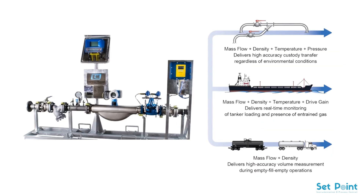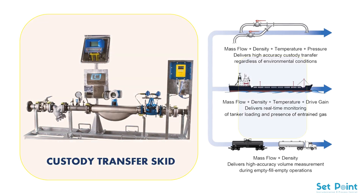Here we have an example of the custody transfer skids, which consists of a batch controller, emergency stop, and the grounding and overfill controller. It also has a temperature transmitter for remote monitoring, a flow control valve to facilitate loading, and a loading arm connection.